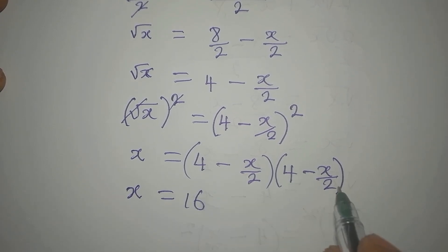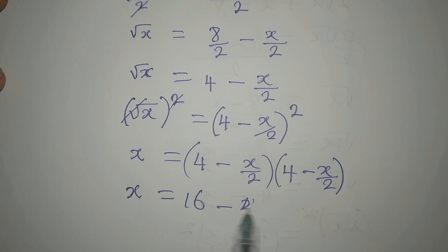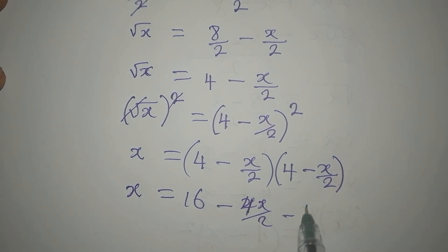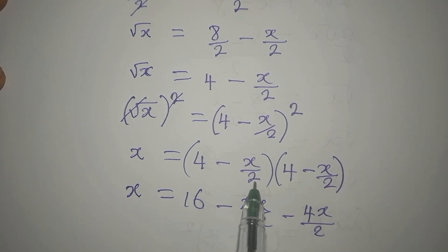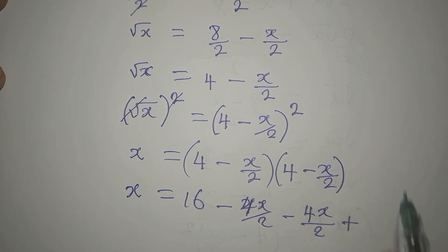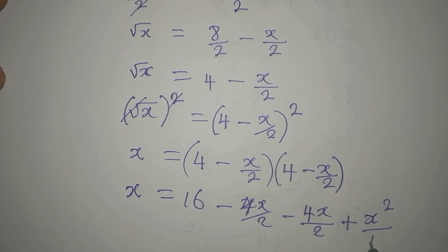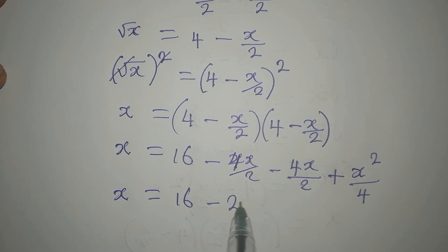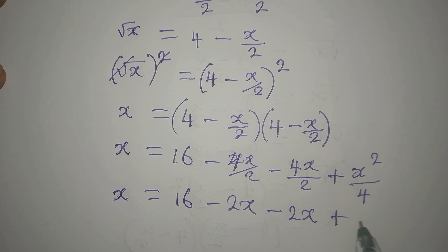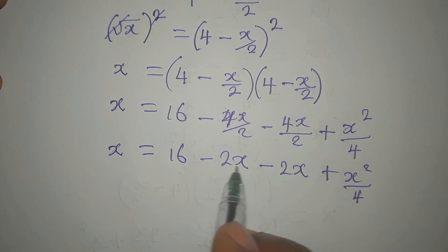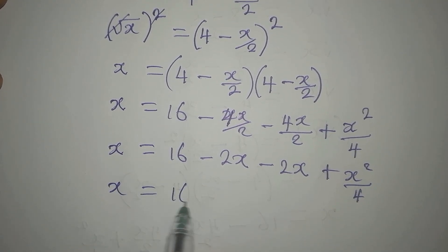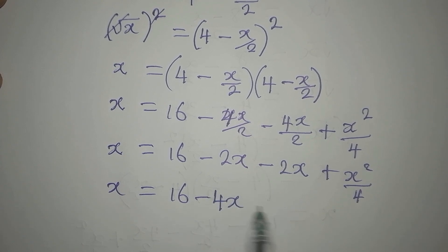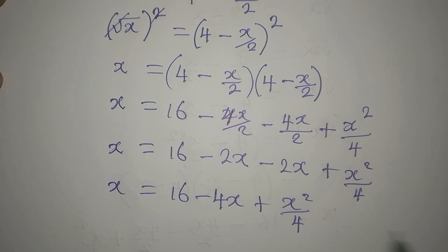Expanding (4 - x/2)²: 4 × 4 = 16, then 4 × (-x/2) = -4x/2, and (-x/2) × 4 = -4x/2, and (-x/2) × (-x/2) = +x²/4. Combining the middle terms: 16 - 2x - 2x + x²/4, so x = 16 - 4x + x²/4.